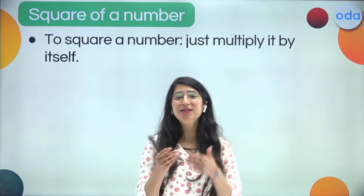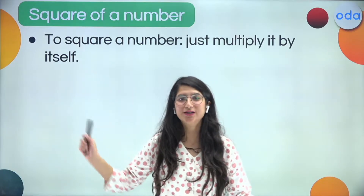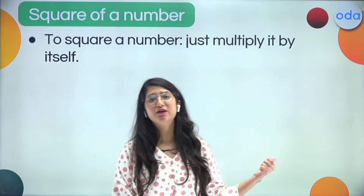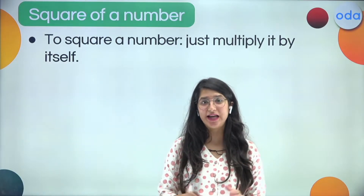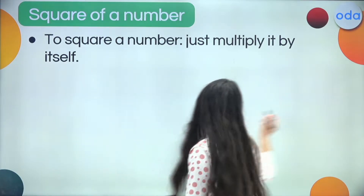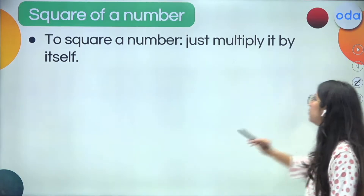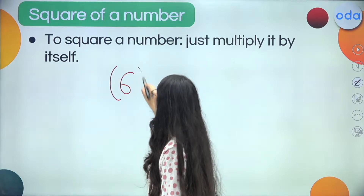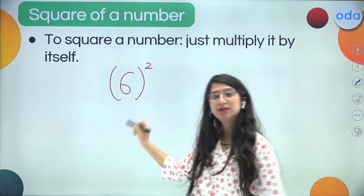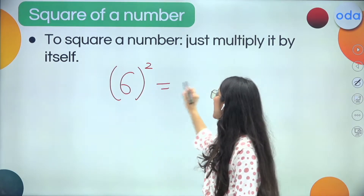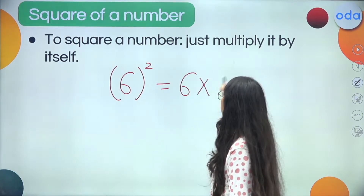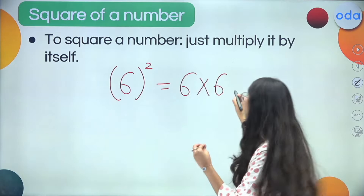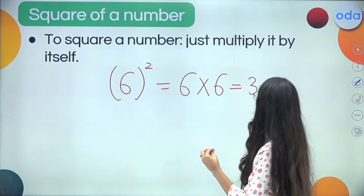The kids who have already attended my session know what squaring means, but let me repeat: squaring means multiplying a number by itself. For example, 6 squared means 6 times 6, which gives us 36. So squaring is nothing but multiplying the number by itself.